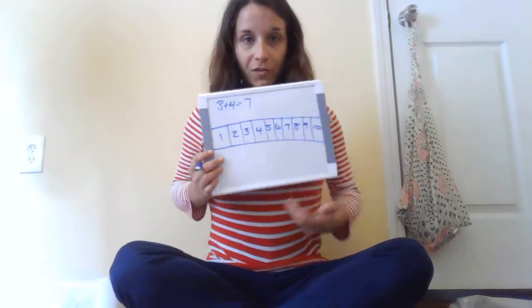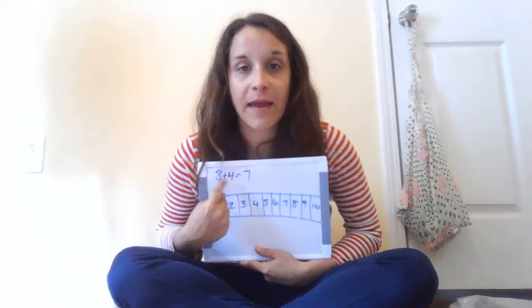The next strategy that we can use is a number line. So I can make a number line on my whiteboard: 1, 2, 3, 4, 5, 6, 7, 8, 9, 10. I'll make a number line to 10. So if I'm going to use a number line to solve this problem, I would start at the number 3 because that's the first number I see. And again, I pay attention to the plus sign that tells me that I'm adding some more.